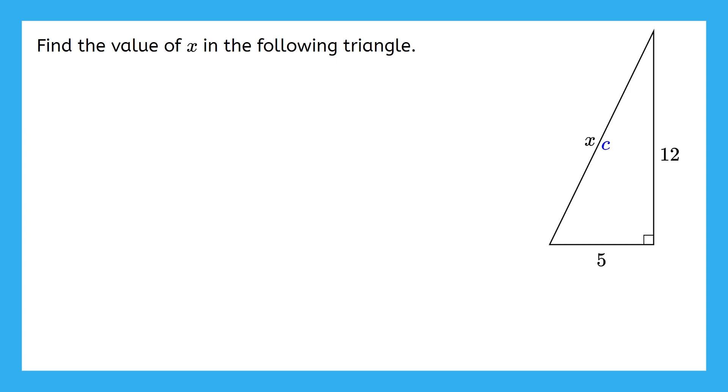Now, we can label our legs in either order, so we'll just let a equal 5 and b equal 12. Then, we use the Pythagorean theorem formula. If you have any of this wrong so far, pause the video now and fix your mistakes.